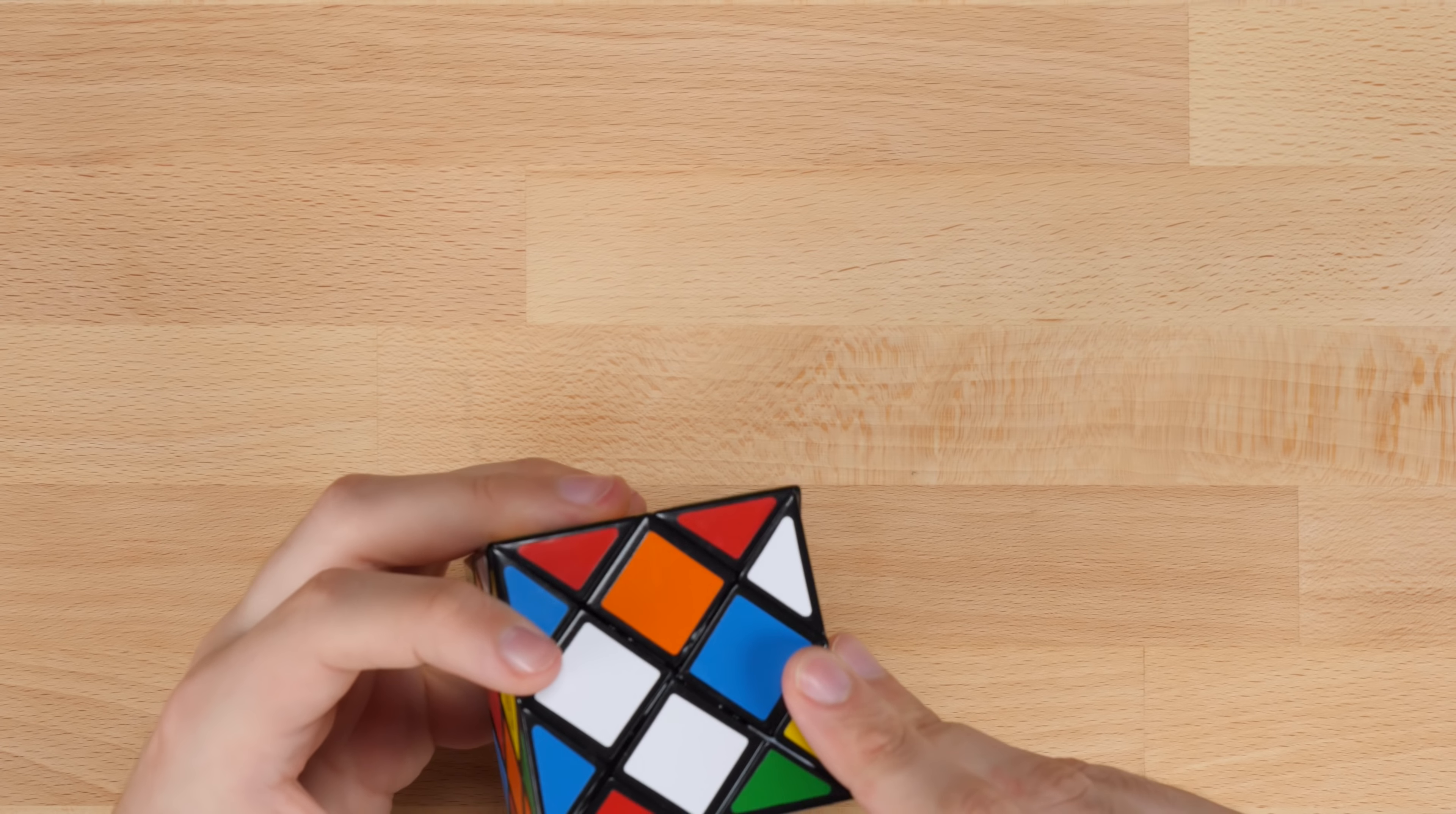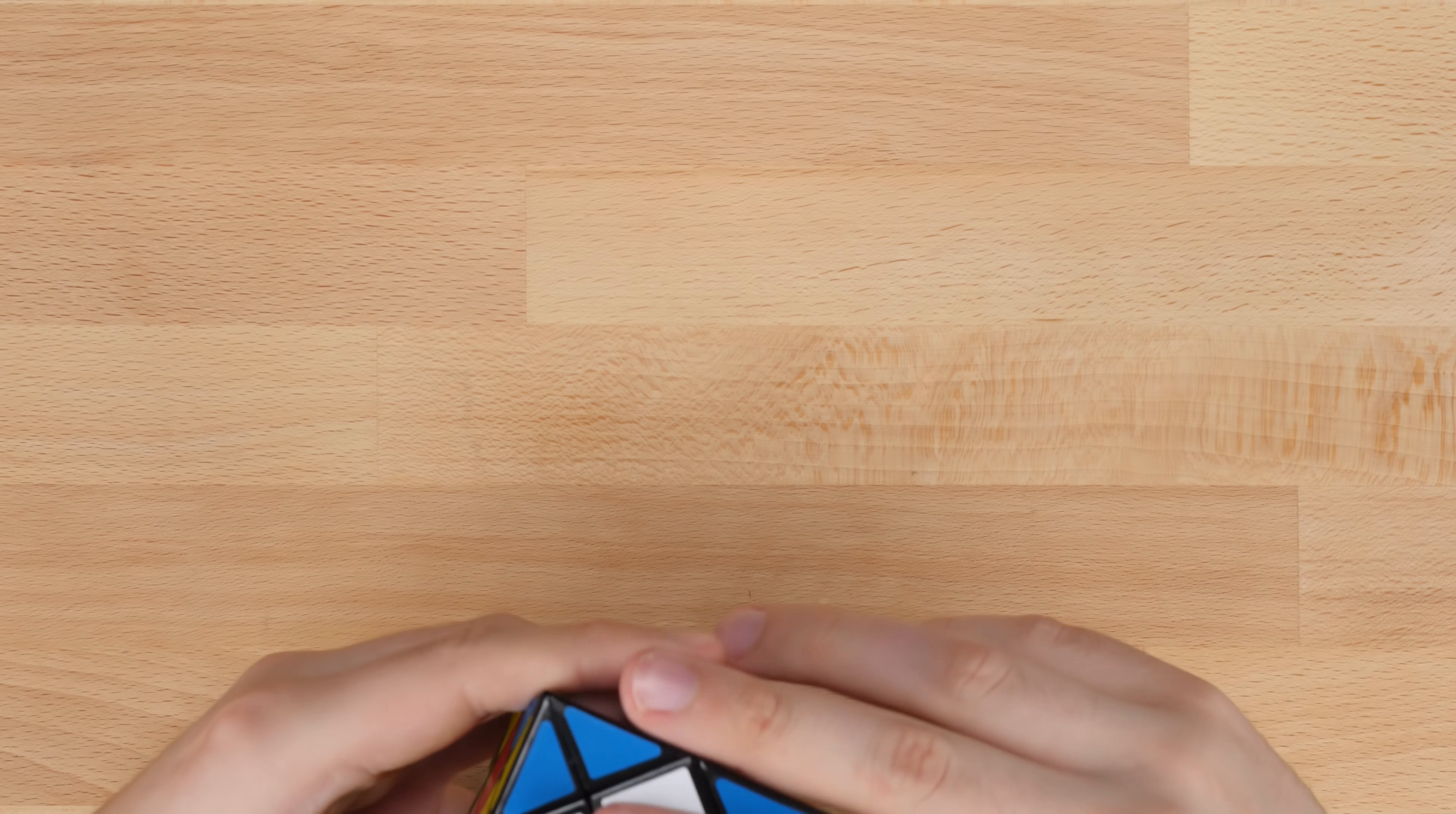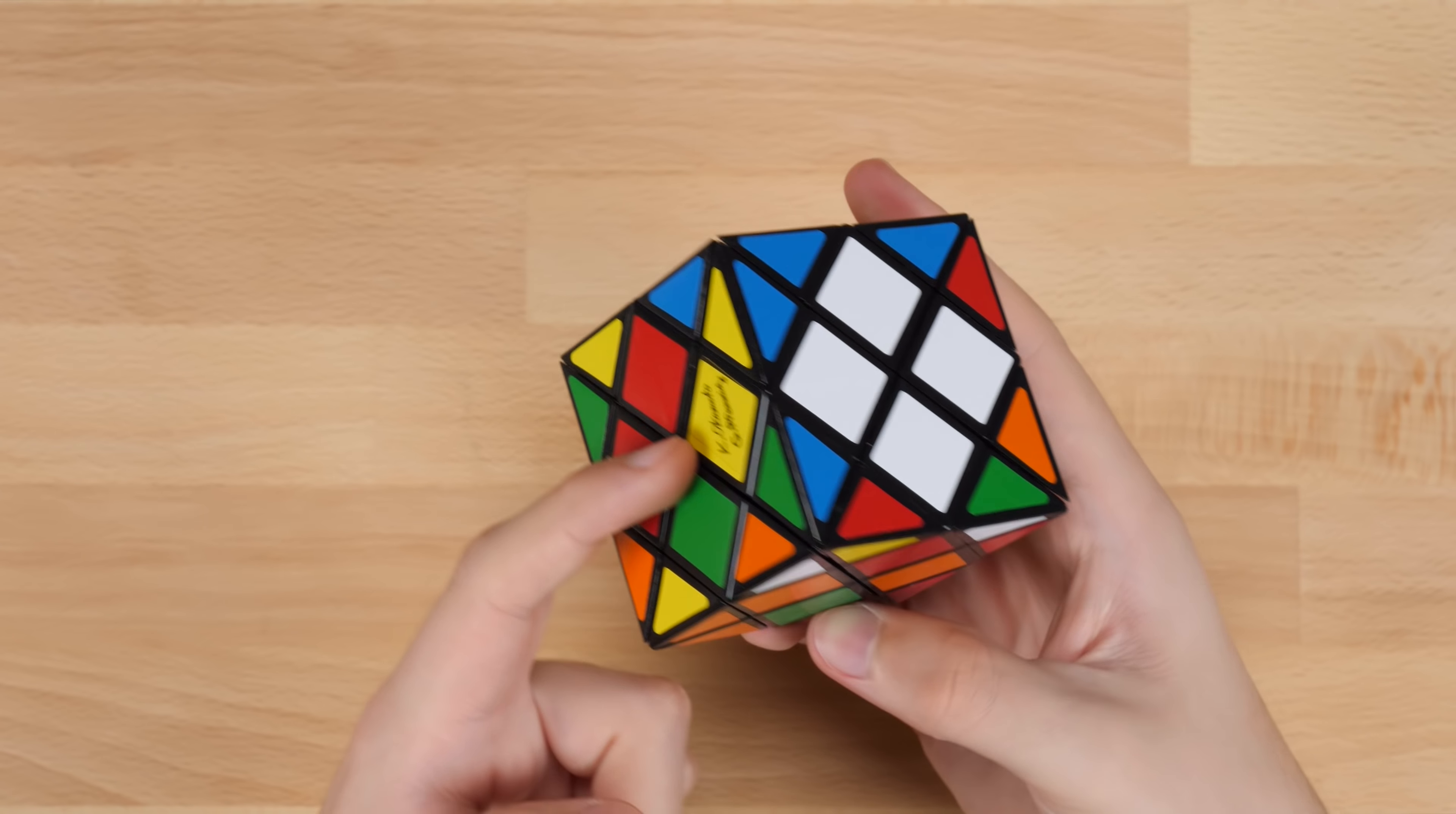First we want to get all of the white pieces up. Although I'm not entirely sure on the color scheme, so we'll just kind of guess here. I think this is probably right like this. Although I'm not sure if any of these two need to be flipped. But we'll see.